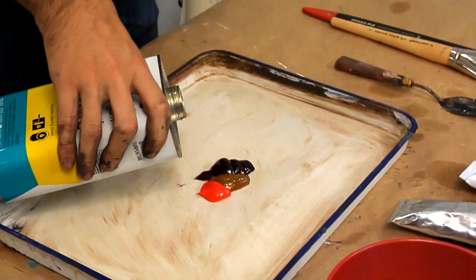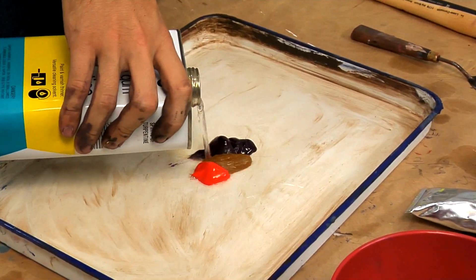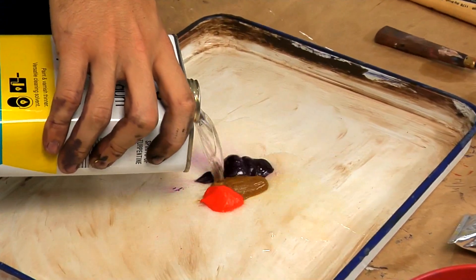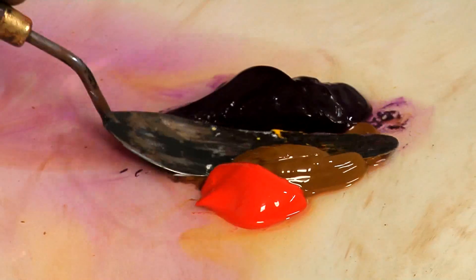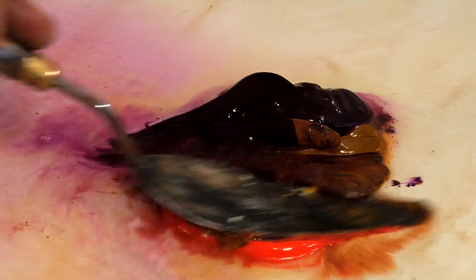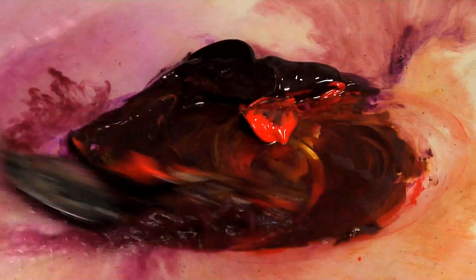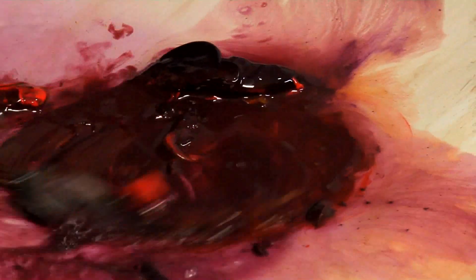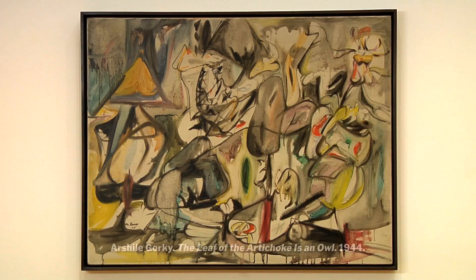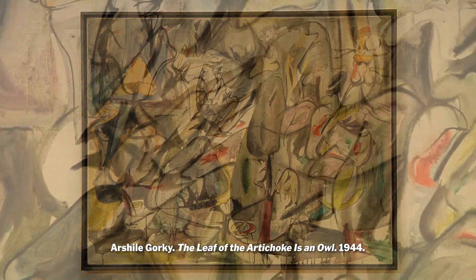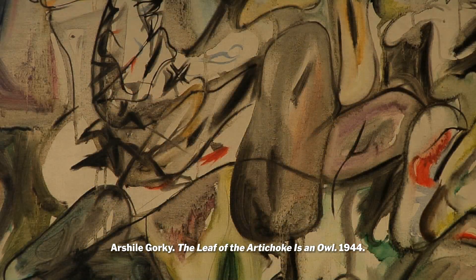A stain is made when you take a paint and you thin it out with a lot of solvent — in the case of oil painting, a lot of turpentine. So the paint becomes very, very watery because it's very dilute, the color is reduced, and also because it's so watery, that stain can actually penetrate into the canvas itself.